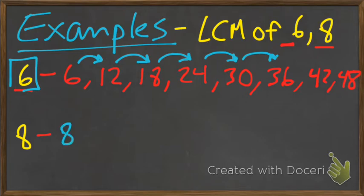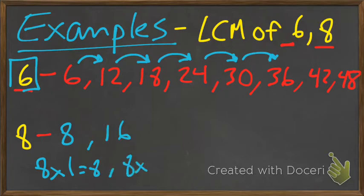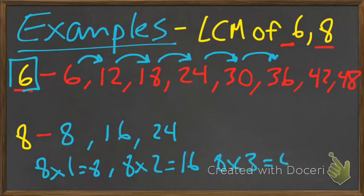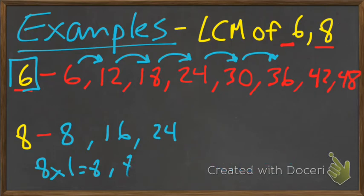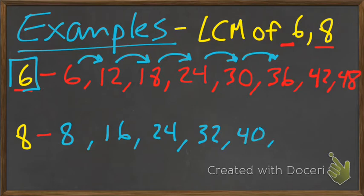We're going to do the exact same for eight. Eight, we'll start off with eight, because that's eight by one. The next multiple for eight is sixteen, because that's eight by two. Next one we have is twenty-four, which is eight multiplied by three. After twenty-four, we end up with thirty-two. After thirty-two, we have forty. After forty, we have forty-eight. And after forty-eight, we have fifty-six.